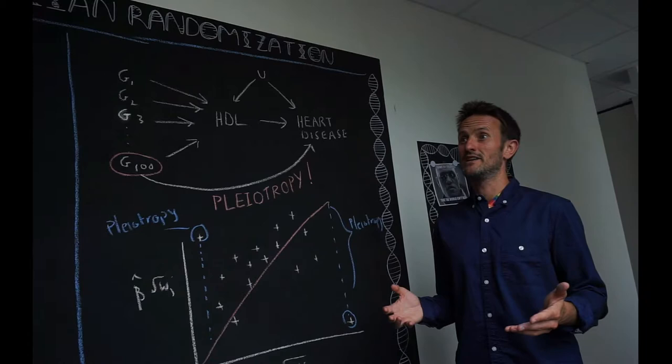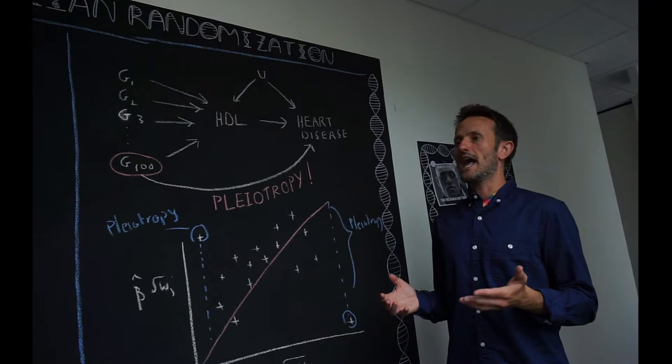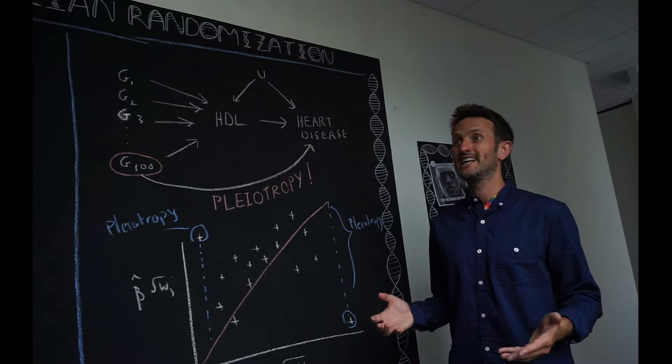So we want to develop methods that can exploit lots of genetic variants simultaneously, but as we have included more and more genetic variants in our MR analysis, it's increasingly likely that some of them actually violate the crucial assumptions that are necessary for Mendelian randomisation to draw causal inferences.